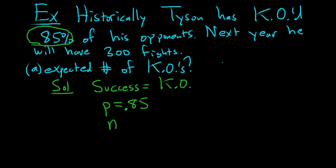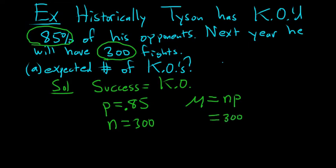n is the number of trials, right? He's going to have 300 fights next year. So we will have 300 trials. So we expect Mr. Tyson to knock out np opponents. So np.